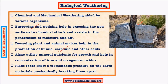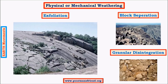Decaying plants release acids such as carbonic acid, sulfuric acid, and nitric acid, which are low in concentration but strong enough to weather rocks. Algae utilize mineral nutrients for growth and help in the concentration of iron and magnesium oxides, which weaken the rock since oxides are weaker than the original element. Under the influence of plant roots, there is breakdown of rocks — an example of mechanical weathering induced by organisms.